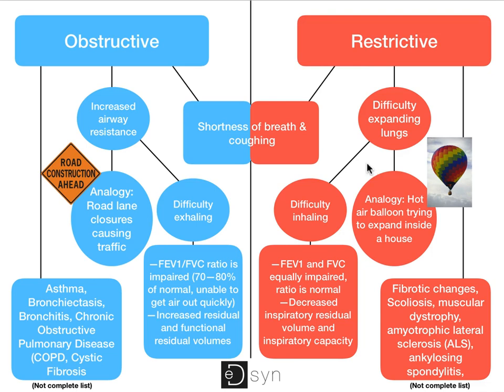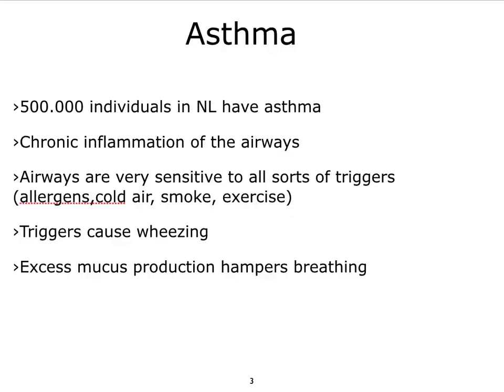We'll talk about these in different online classes; this one is about asthma. Asthma affects around half a million individuals in the Netherlands. It's a chronic inflammation of the airways, and through this inflammation the airways become very sensitive to all sorts of triggers — allergens, cold air, smoke, or exercise — which cause shortness of breath and wheezing. In addition, the inflammation also induces excess mucus production, which hampers breathing even more.